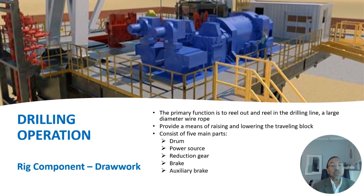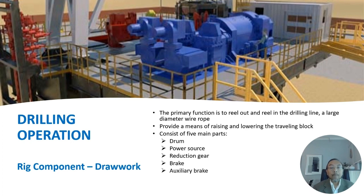The draw works' primary function is to reel out and reel in the drilling line — a large diameter wire rope — providing a means of raising and lowering the travelling block. It consists of five main parts: drum, power source, reduction gear, brake and auxiliary brake. The draw works is part of the system rotary drilling rigs use for hoisting or lifting the drill stem and casing out of the hole. Reeling out of the drilling line is powered by gravity, and reeling in is powered by electric motor or diesel engine.